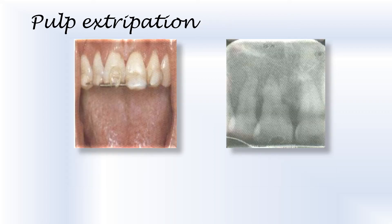This is a picture after 2-3 weeks. The involved tooth has moved down considerably as the process of extrusion is continuing. At this stage, it is important that root canal treatment is started. An access cavity is made in the involved tooth, the pulp is extirpated from the canal, and the canal is filled with calcium hydroxide paste.